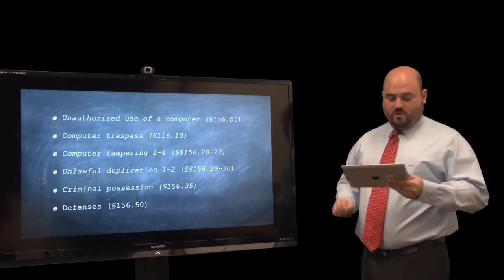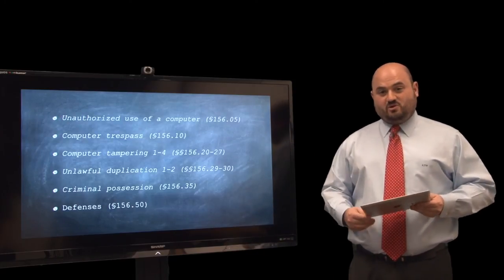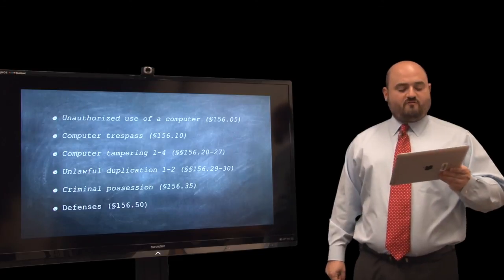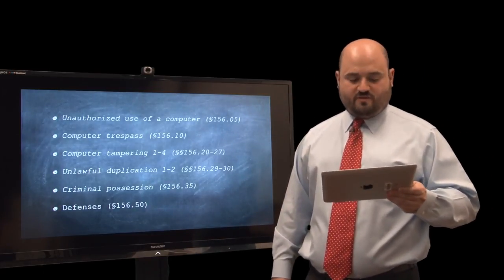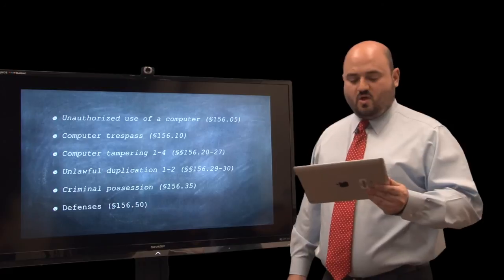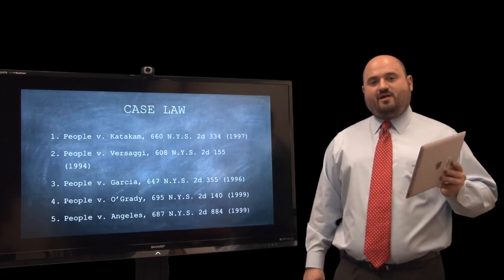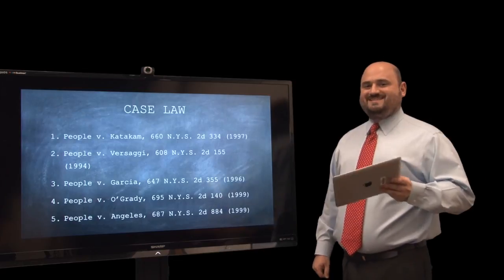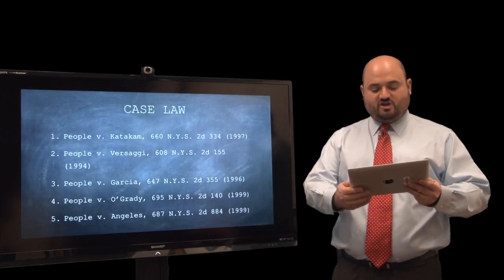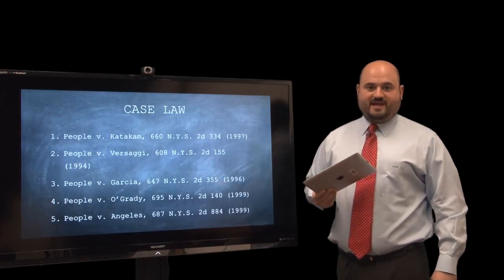Let's review. We went over six major concepts — seven if you include definitions: unauthorized use of a computer, computer trespass, four degrees of computer tampering (first, second, third, and fourth), unlawful duplication in the first and second degree, criminal possession, and defenses. There are several important cases, and I'll have another podcast covering them. Some of the most important New York State cases are People v. Katakam, People v. Versagi, People v. Garcia, People v. O'Grady, and People v. Angelis — with additional podcasts on each.